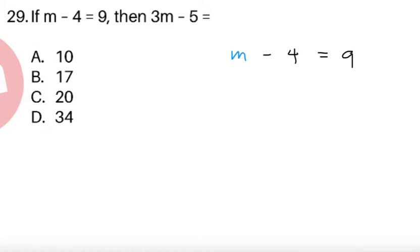To continue, item 29. If m minus 4 equals 9, then 3m minus 5 equals blank.